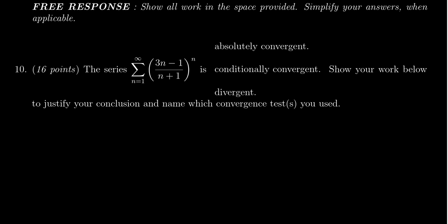We're given the series where we take the sum from n equals 1 to infinity of the sequence 3n minus 1 over n plus 1, and that entire term is raised to the nth power. We have to decide whether this series is absolutely convergent, conditionally convergent, or divergent, and show all of our work and mention any convergence tests that we're using.